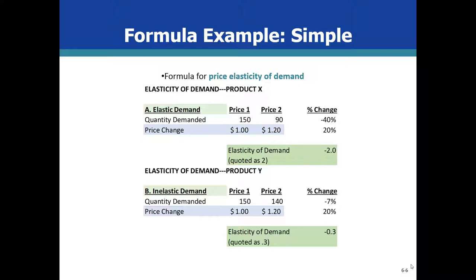Here's a simple example of how to calculate the elasticity of demand. I've set this up to show two products: product X at the top and product Y at the bottom. I've included the quantity demanded, the price change, and the resulting elasticity of demand, and I want to walk through those.